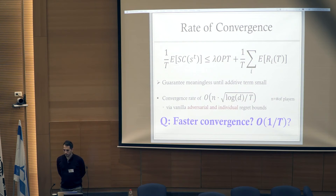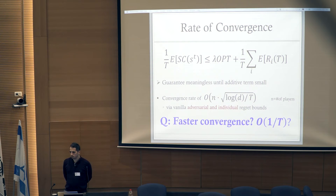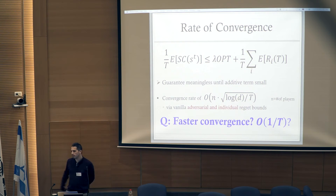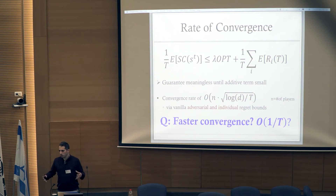The main question and motivation of this talk is whether we can do faster — whether we can arrive at outcomes that are essentially the price of anarchy of the game at a rate of 1 over T. This question was asked before and given a partial answer: yes, but only in specific settings and for specific algorithms.